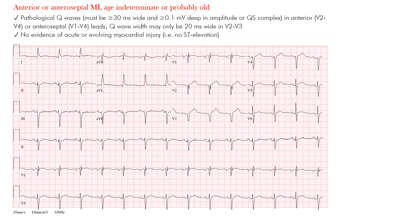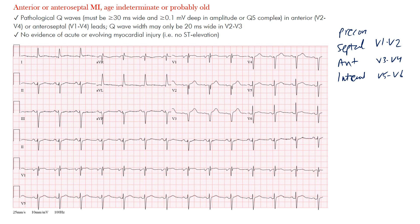Let's get started. For an anterior or anteroseptal MI that is age indeterminate — probably an old MI — what do we see on the EKG? Just as with an acute anterior MI, we look at specific leads. For septal leads in the precordial we think of V1 to V2, anterior is V3 to V4, and lateral is V5 to V6.